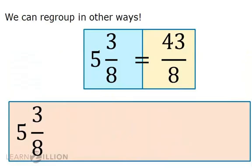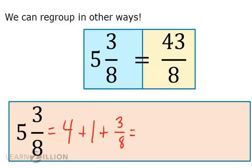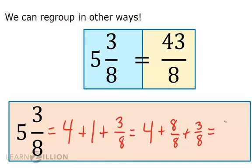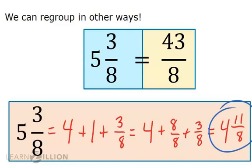I'm going to explain the idea of subtracting mixed fractions with regrouping by first demonstrating that we can regroup in other ways. If we simply split 5 and 3 eighths into 4 plus 1 plus 3 eighths, we can then regroup the 1 as 8 eighths. This creates 4 plus 8 eighths plus 3 eighths, which all together creates 4 and 11 eighths. We'll return to this 4 and 11 eighths later, but first let's look at a common denominator example.